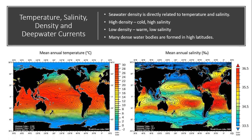The following global surface map illustrates that seawater density is directly related to temperature and salinity. High-density seawater tends to be cooler with higher salinity, while lower-density seawater tends to be warmer with lower salinity. As a result, many dense water bodies are formed at high latitudes.